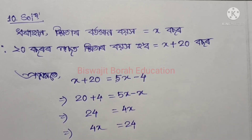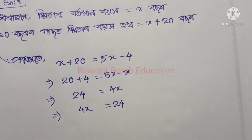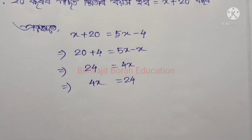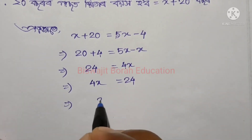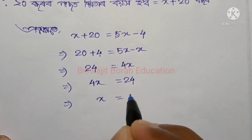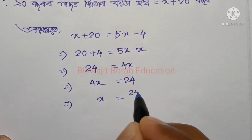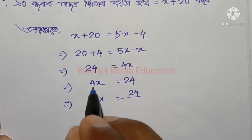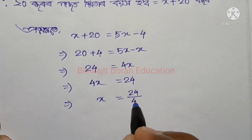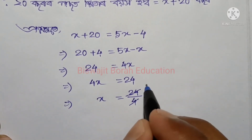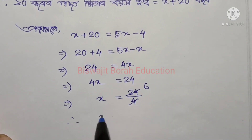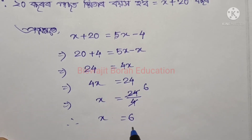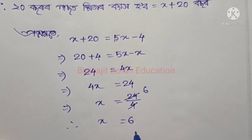So b equals 24. Therefore 4x equals 24, which gives x equals 6. So b equals 64, 24 equals 8x — continuing to simplify the equation.